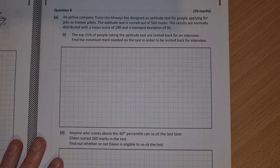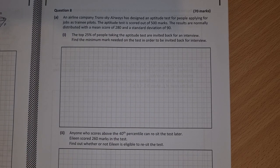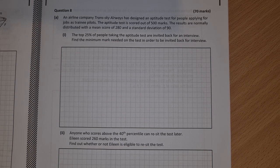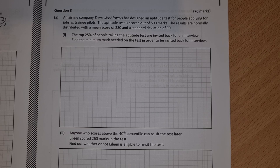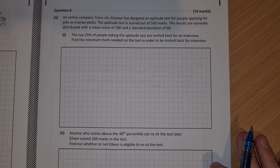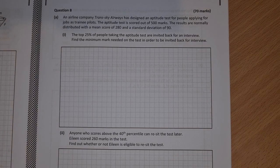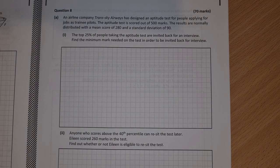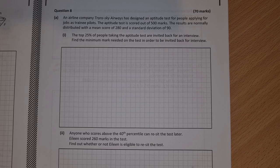Question 8 is our inferential statistics question. An airline company Trans Sky Airways has designed an aptitude test for people applying for jobs as trainee pilots. The aptitude test is scored out of 500 marks, normally distributed with a mean of 280 and standard deviation of 90. The top 25% of people taking the aptitude test are invited back for an interview. Find the minimum mark needed on the test in order to be invited back for interview.